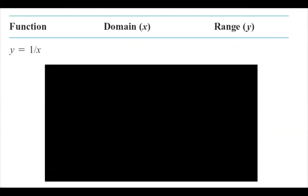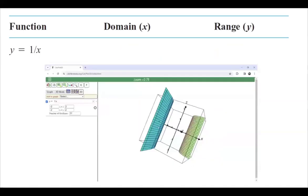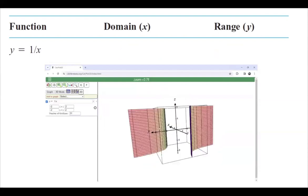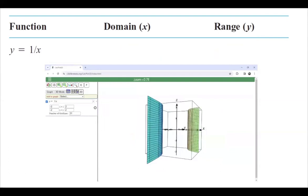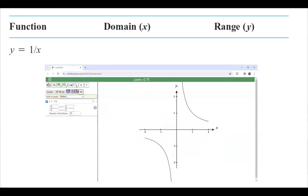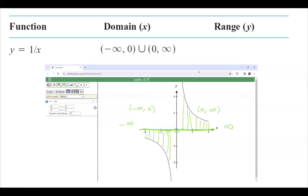The next function is the reciprocal function, 1 over x. In 3D it behaves this way. In 2D it has two pieces because of the vertical asymptote. The reflection of the graph on the x-axis goes from negative infinity to 0 — 0 is not included — and then from 0 to positive infinity, again 0 not included. In mathematical notation you write negative infinity to 0 union 0 to positive infinity.